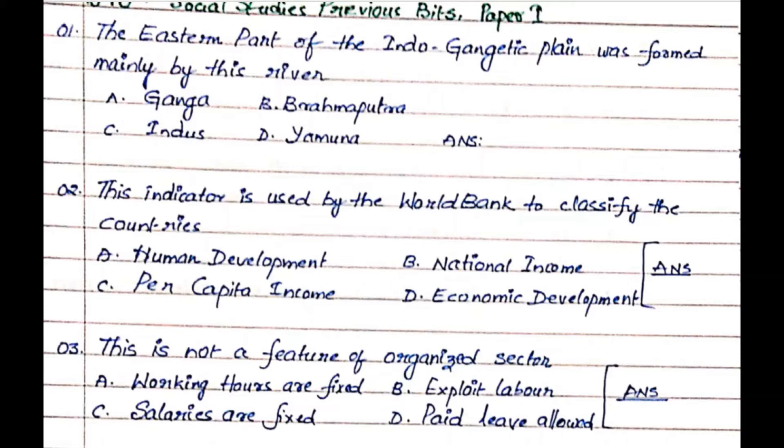Question number 3: This is not a feature of the organized sector. Option A. Working hours are fixed, Option B. Exploit labor, Option C. Salaries are fixed, Option D. Paid leave. The answer is Option B. Exploit labor.